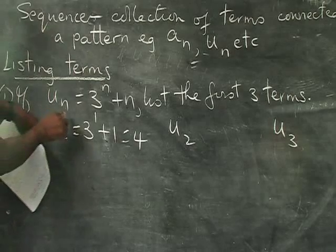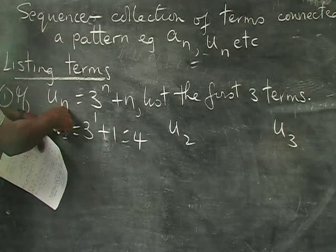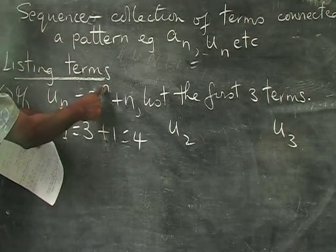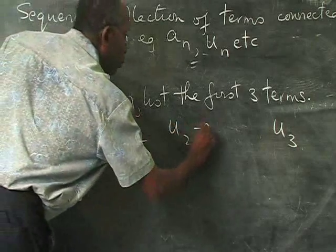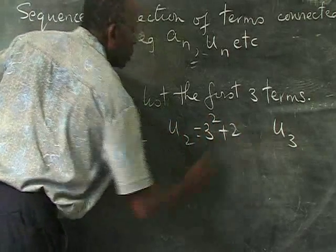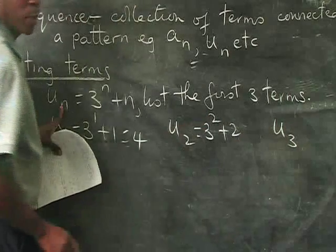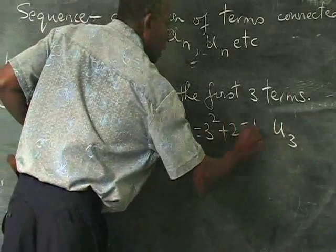Now U2 would mean at this time that N becomes 2. If N becomes 2, we have 3 to the power 2 plus 2. 3 to the power 2 is 3 squared, that's 9. Plus 2 would give us 11.